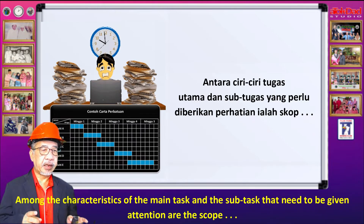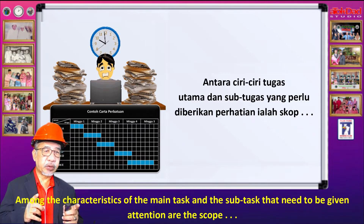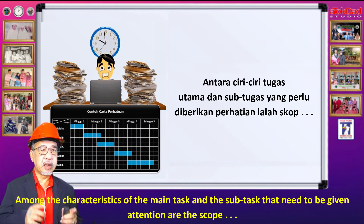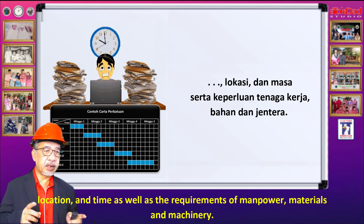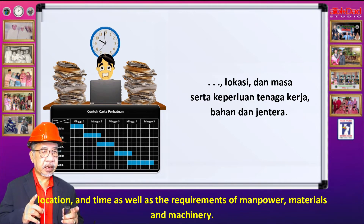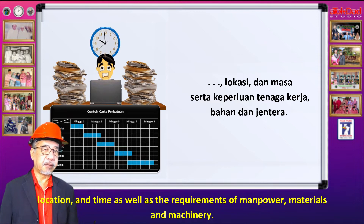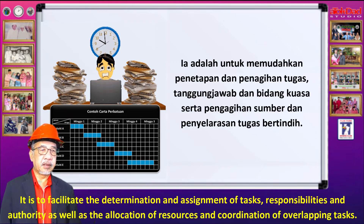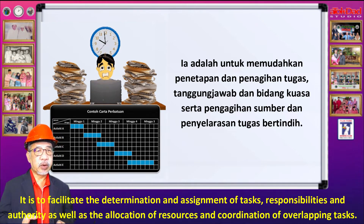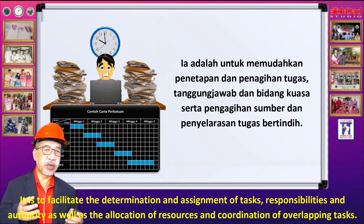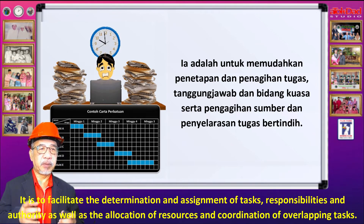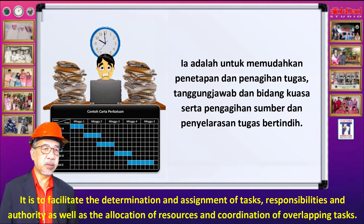Antara lain, ciri-ciri tugas utama dan sub-tugas yang perlu diberikan perhatian ialah skop, lokasi dan masa, serta keperluan tenaga kerja, bahan dan jentera. Ia adalah untuk memudahkan penetapan dan pengagihan tugas, tanggungjawab dan delegasi kuasa, serta pengagihan sumber dan penyelarasan tugas bertindih.